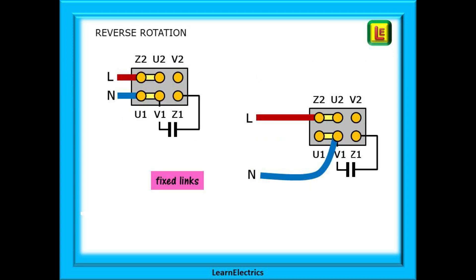Here we have the drawings for the reverse direction. They are almost the same as the previous slide except that the two links are in a different position. These are the links that must be repositioned each time there is a change of rotation needed. Installing a switch will make this constant changing unnecessary.